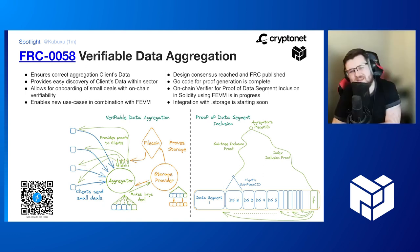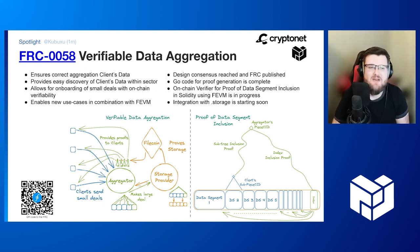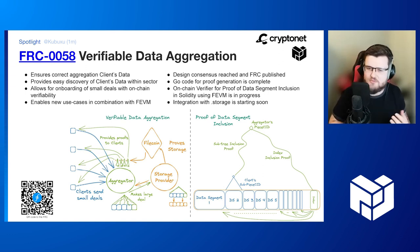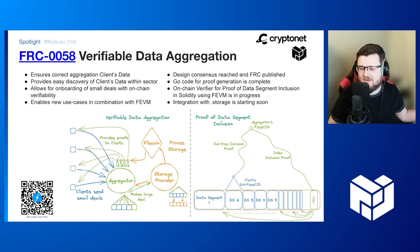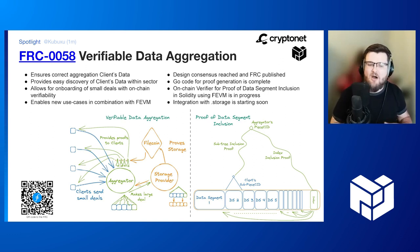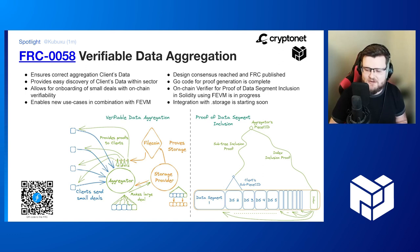Hi, I'm Cuba. Small deals — accepting small deals for storage providers is an issue of scale. A medium-sized storage provider would have to accept on the order of a million small deals a day to fill up their sealing pipelines, which is why aggregation services like Estuary and Dot Storage showed up in the Filecoin network. Those services provide aggregation, but the client currently completely trusts that aggregation service, which is fine as long as those services are trustworthy.